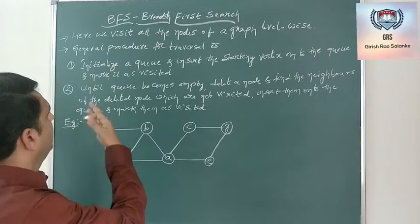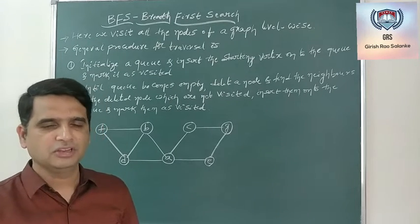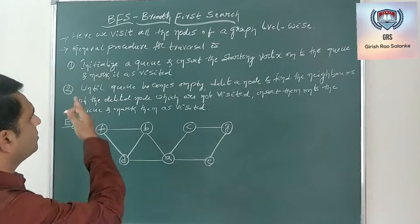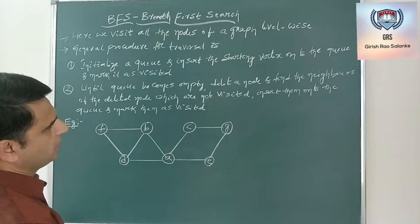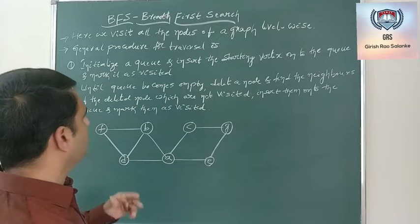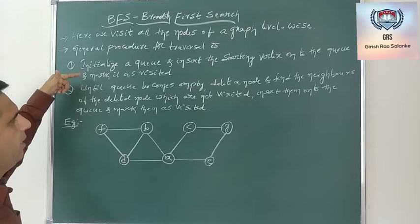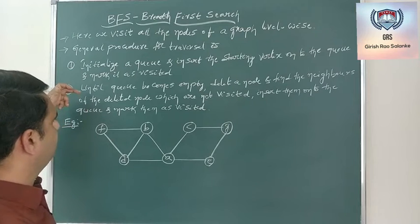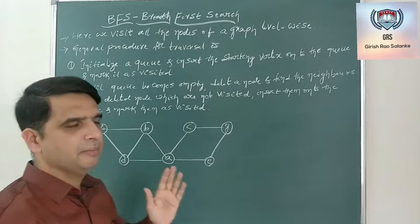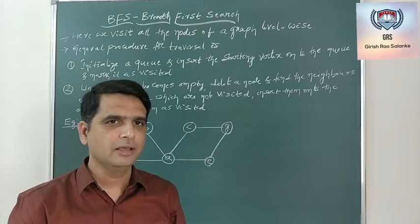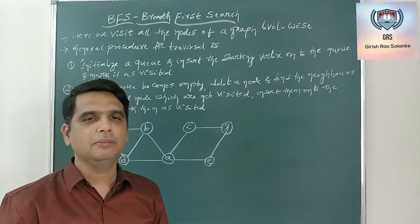In BFS traversal, we visit all the nodes in a given graph level wise. The general procedure for BFS traversal is: for a given graph, initialize a queue starting with the source vertex enqueued and mark it as visited. The second step states that until the queue becomes empty, delete a node from the queue, find the neighbors of the deleted node which have not been visited, put them onto the queue and mark them as visited. This step should be continued until the queue becomes empty.